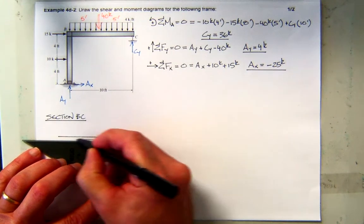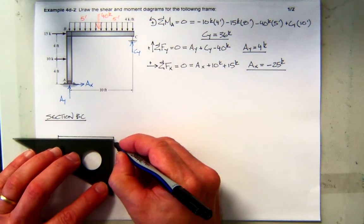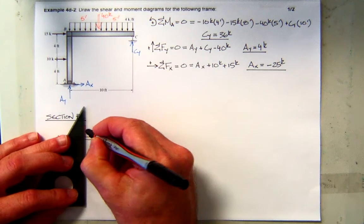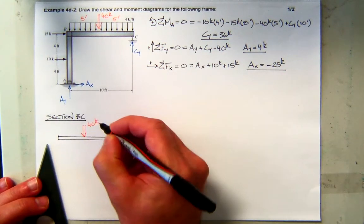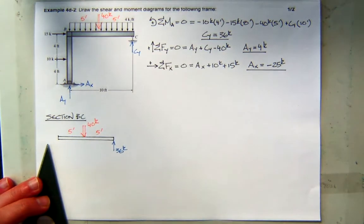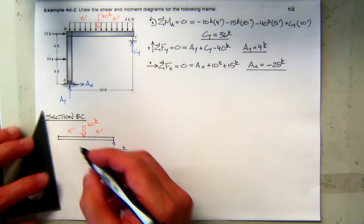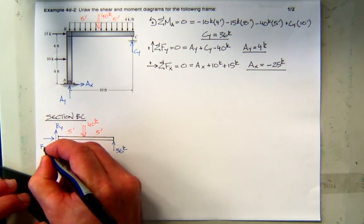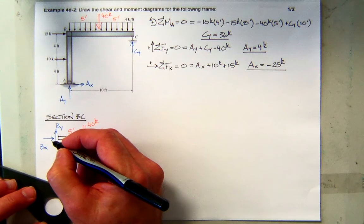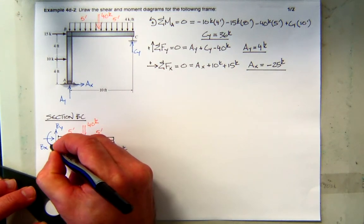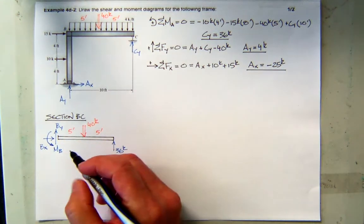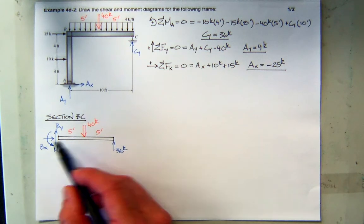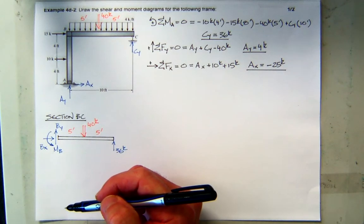When you look at that free body diagram, let's put on there what we know. I know my CY value is 36 kips. I already know my concentrated equivalent force — it's 40 kips right in the middle. Now I need to decide what's happening at B. I'm going to assume I have a BY force, a BX force, and a moment. So I assumed a typical positive X force, a typical positive Y, and a right-hand-rule moment.